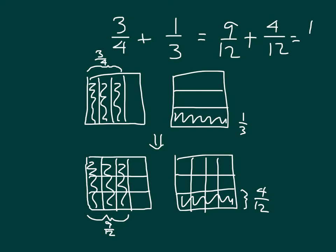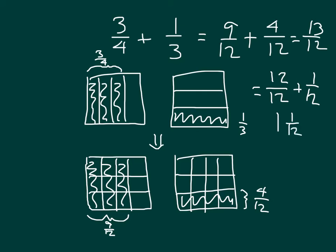I do get 13-12ths, and 13-12ths is bigger than 1. We have 12-12ths already, and 13-12ths is 12-12ths plus 1 more twelfth. 12-12ths is equal to 1, and then we have 1 plus 1-12th, which is 1 and 1-12th. So 3-4ths plus 1-3rd does equal 1 and 1-12th.